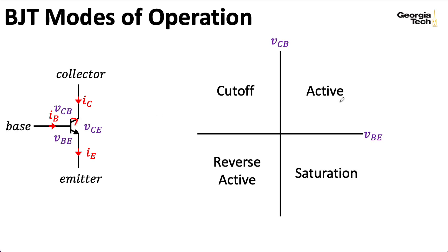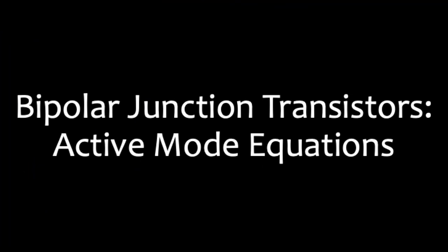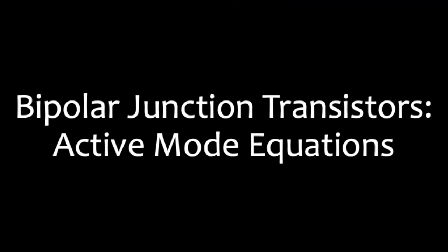So we're mostly going to be focusing on the active region in this class, where the BE junction is forward biased, but the BC junction is reverse biased. And in this lecture, we're going to take a look at the equations that govern that mode of operation.